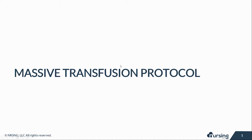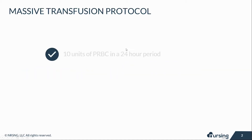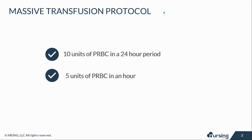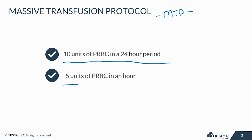Hey guys, in this lesson we're going to talk about massive transfusion protocols. Knowing what an MTP is — that's the abbreviation — MTP, massive transfusion protocols: it is usually initiated when a patient needs 10 units of packed RBCs in a 24-hour period, or five units of packed RBCs in one hour.